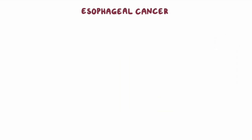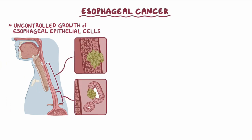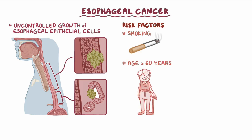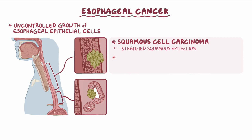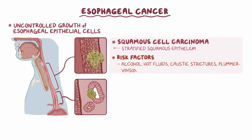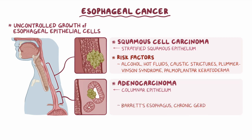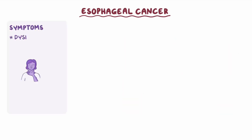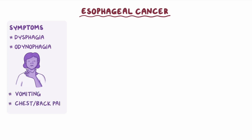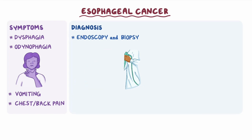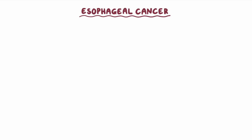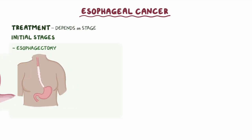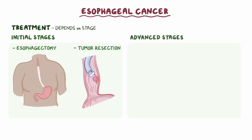As a quick recap: esophageal cancer is the uncontrolled growth of esophageal epithelial cells. Risk factors for both types include smoking, age over 60 years, and achalasia. Squamous cell carcinoma arises from stratified squamous epithelium; specific risk factors include alcohol, hot fluids, caustic strictures, Plummer-Vincent syndrome, and palmoplantar keratoderma. Adenocarcinoma arises from columnar epithelium; Barrett's esophagus and chronic GERD are the most important risk factors, along with obesity and male sex. Symptoms include dysphagia, odynophagia, vomiting, and chest or back pain. Diagnosis is made with endoscopy and biopsy; chest CT, X-rays with barium contrast, and PET are used for further evaluation. Treatment depends on the stage: esophagectomy and tumor resection for initial stages, and chemoradiotherapy combined with surgery for more advanced stages.